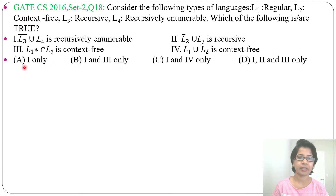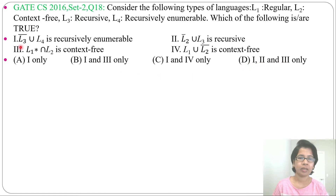Four options are given. Option A: one only. Option B: one and three only. Option C: one and four only. Option D: one, two and three only.